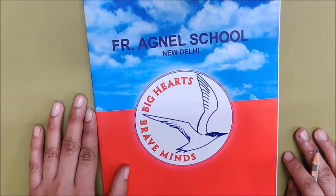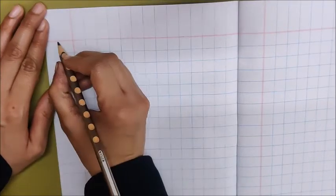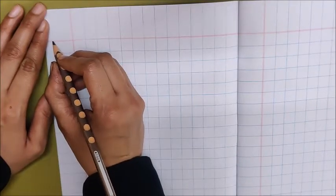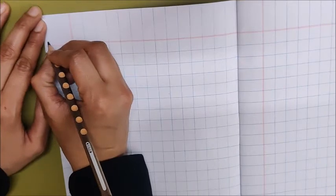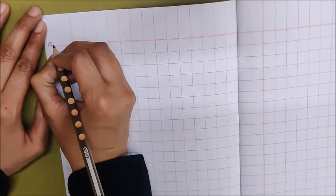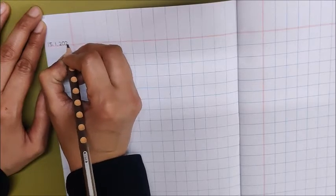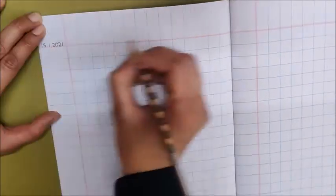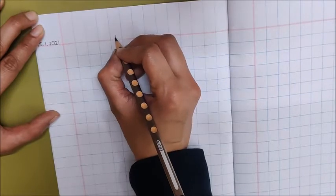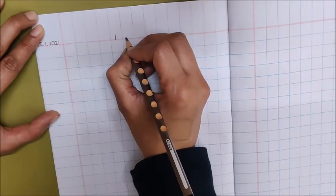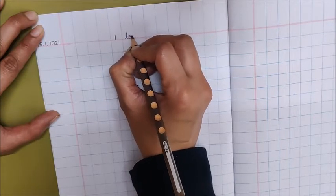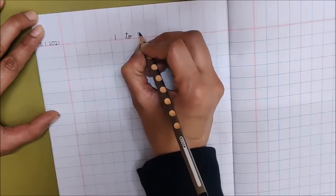So open a new page. Write down here today's date. Today is January 15, 15 dot, 1 dot, 2021. On the red line, write down 1, then write down T0 to 99.